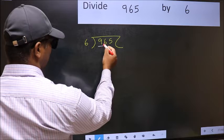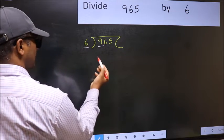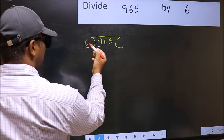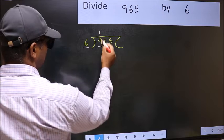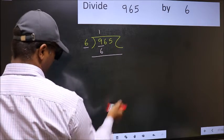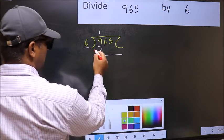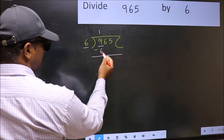Here we have 9, and here 6. A number close to 9 in the 6 times table is 6. Once 6. Now you should subtract. 9 minus 6 is 3.